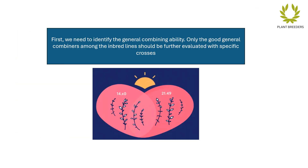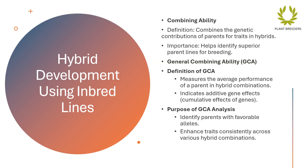First, we need to identify the general combining ability (GCA). Only the good general combiners among the inbred lines should be further evaluated with specific crosses. GCA measures the average performance of a parent in hybrid combinations and indicates additive gene effects — the cumulative effects of genes.